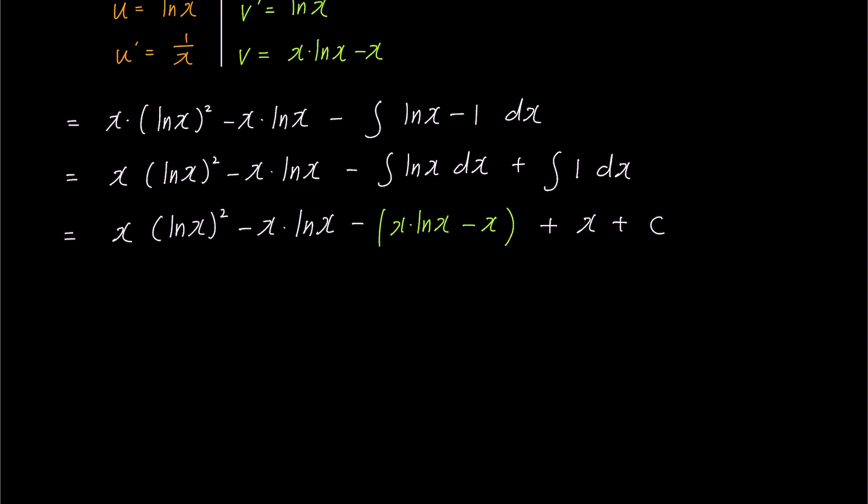Here, the green bracket represents the integral of ln(x). Now, if we further simplify the green bracket, we get x times ln(x) squared minus x ln(x) minus x ln(x) plus x plus x plus c. Notice that we have negative ln(x) and x appearing twice each. So the final answer is x times ln(x) squared minus 2x ln(x) plus 2x plus c.